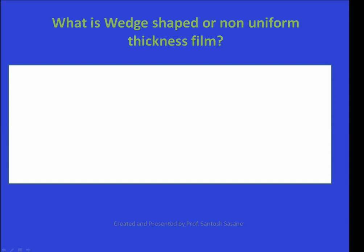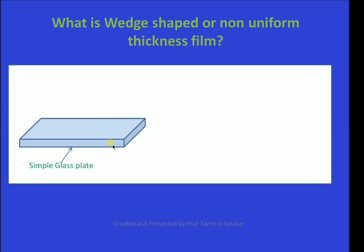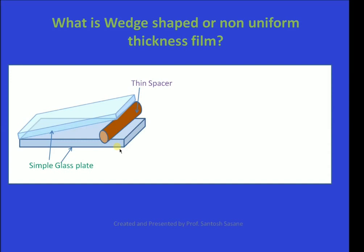In this video we are going to see what is a wedge-shaped film, how interference takes place in the wedge-shaped film, and the brightness and darkness conditions. To understand what is a wedge-shaped film, consider this figure: there is a simple glass plate, on that put one thin spacer at one side, and on that put another simple glass plate. In between these two glass plates there is air, and that air shape will be somewhat like a wedge as shown in the dashed line. Practically this spacer should be very very thin to get a thin wedge-shaped film; otherwise you get a thick wedge-shaped film and interference will not take place. For simplicity only, the spacer is shown as thick, but practically they are very very thin.